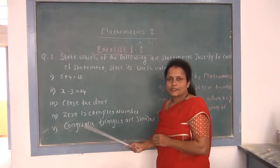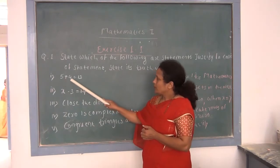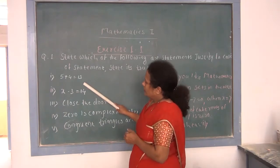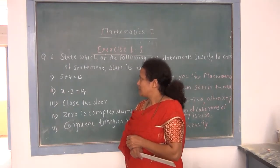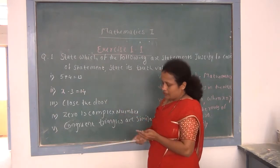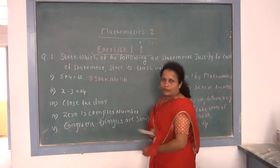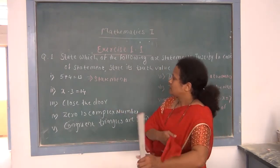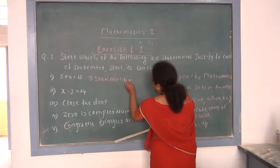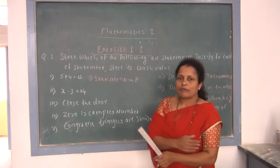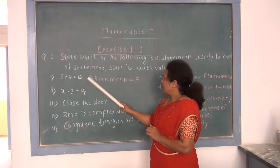First, we have to find whether a given sentence is a statement or not, and if it is a statement, state its truth value. The first example is 5 plus 4 is equal to 13. It is a statement because it is an assertive or declarative sentence — 5+4 is 9, not 13, so the truth value is false.